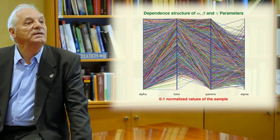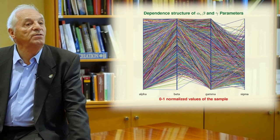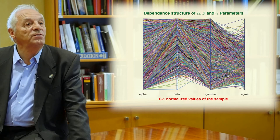And then, we plot different segments and you have these pictures. And this picture allows you to see which pairs or which triplets are dependent and which ones are not. But these are 0 and 1 normalized values of the sample.